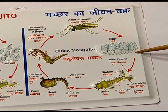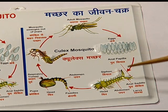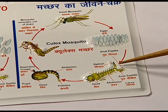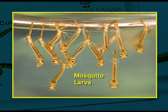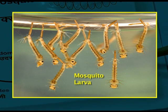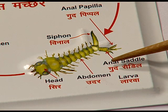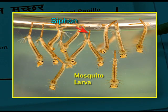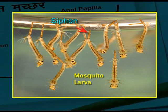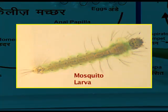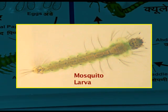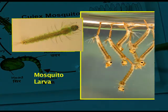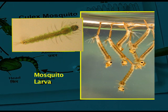Within 48 hours, the eggs give rise to a larva stage. This larva stage is unique — you can see very hairy structures, and these hairs are called bristles. The larva of Culex mosquito possesses a specialized structure called a siphon, which helps in respiration. In Anopheles mosquito this siphon is absent, so the larvae of Anopheles lie parallel to the water body, while the larvae of Culex mosquito lie inverted in the water.